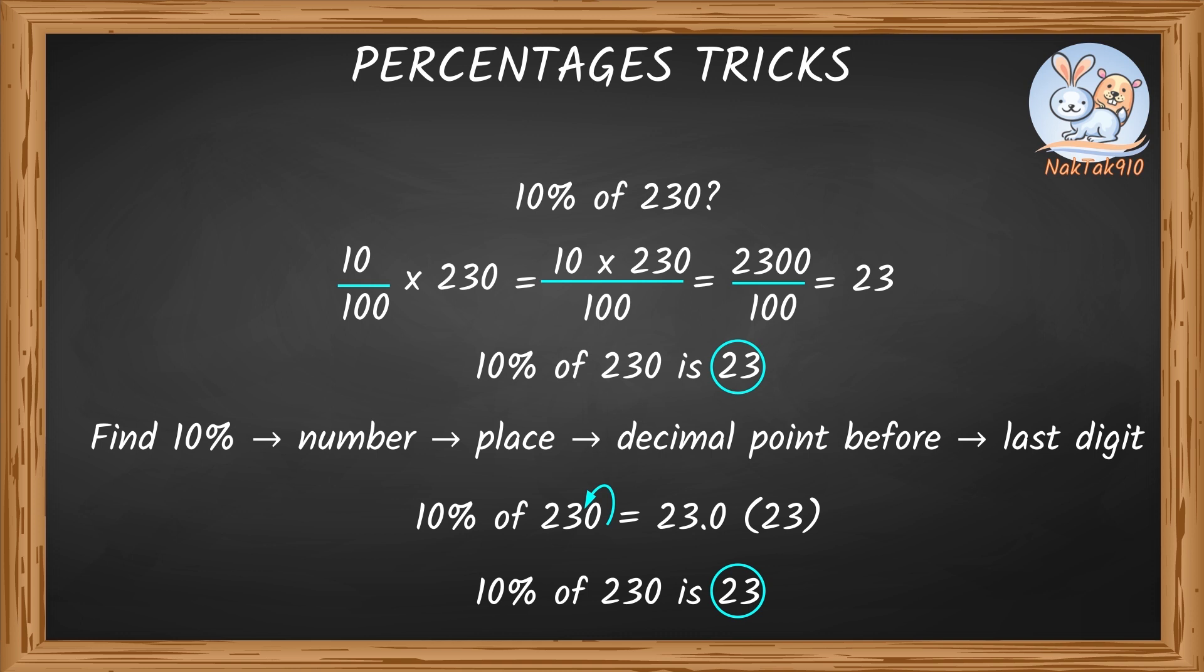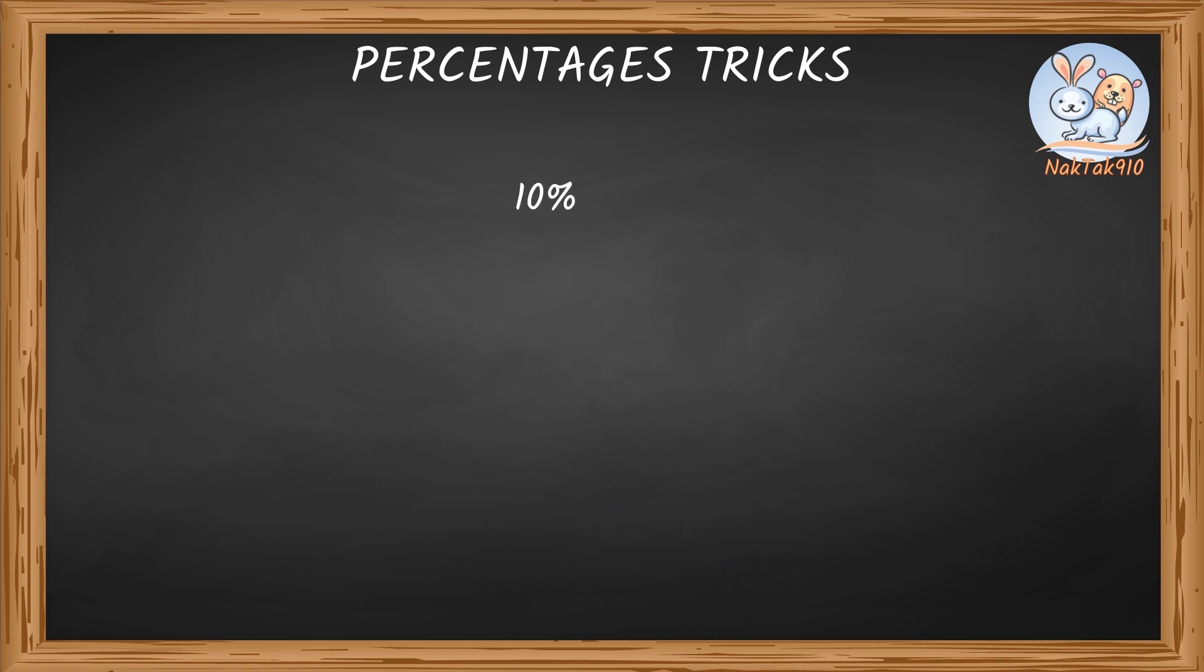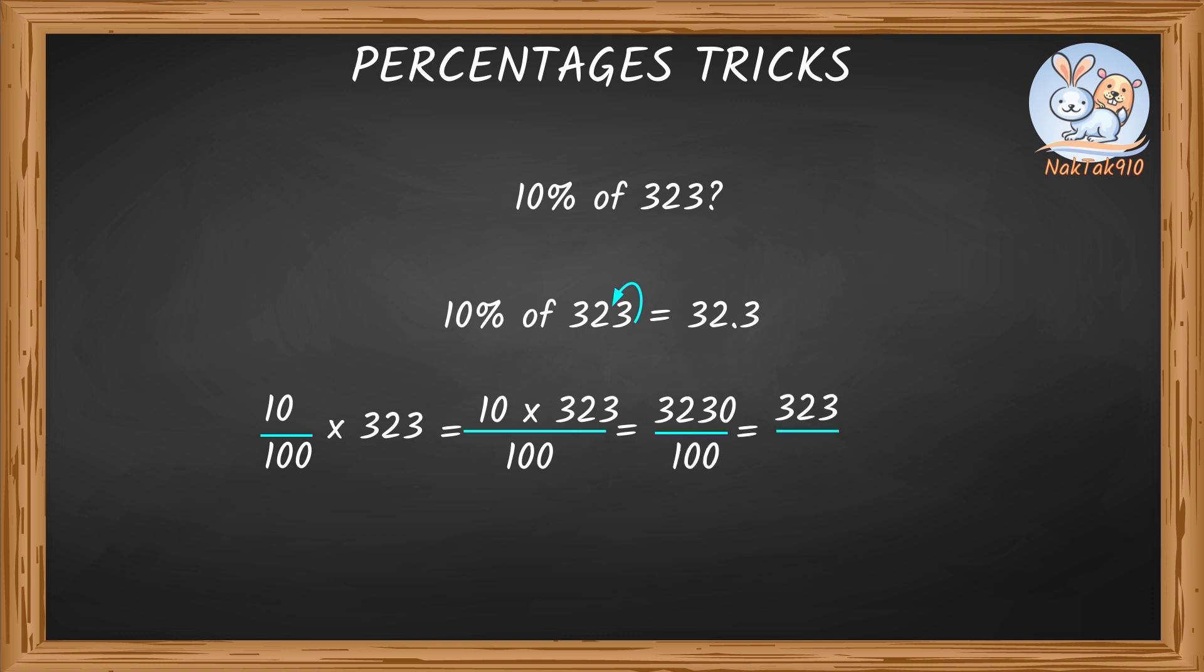Now let's try this with another example. 10% of 323. Just by looking at this, we can say 10% of 323 is 32.3. Just, we need to place the decimal point before the last digit. Now let's verify with our calculation. 10 by 100 times 323. 10 times 323 divided by 100, which is 3230 divided by 100. So, 323 by 10? So, our answer is 32.3.